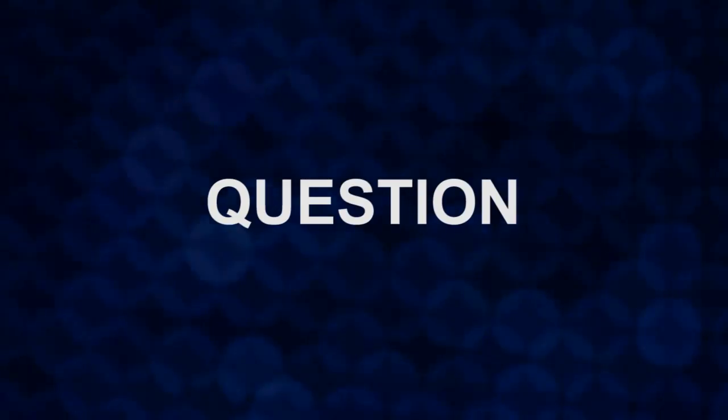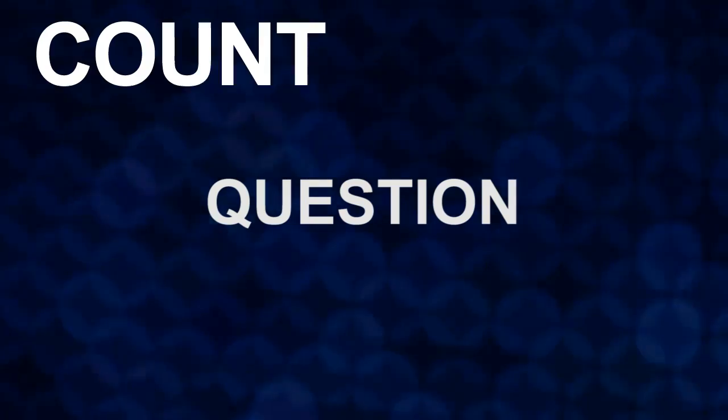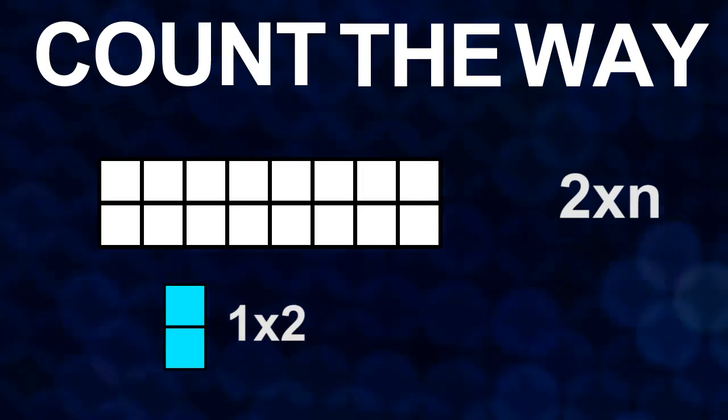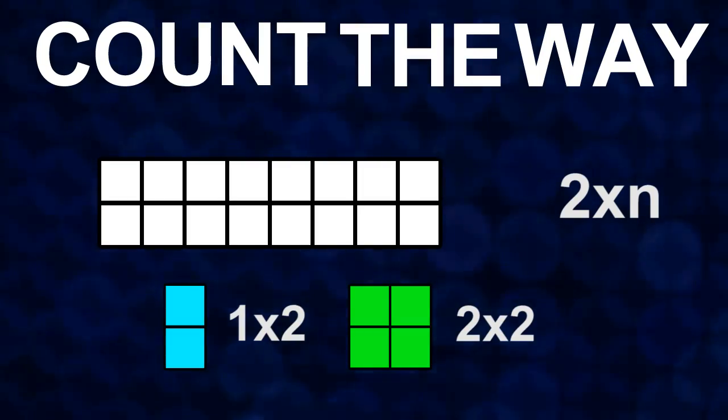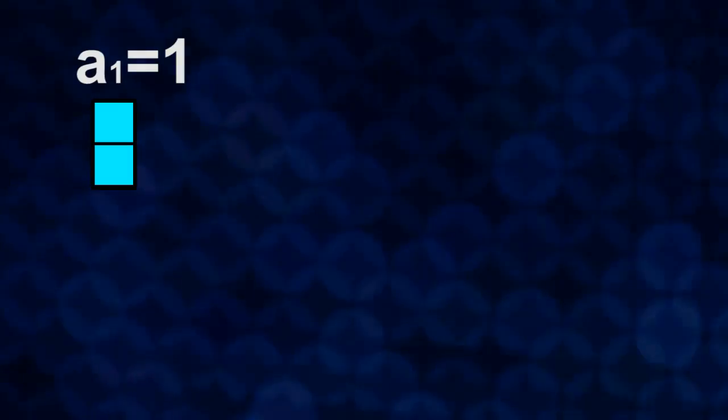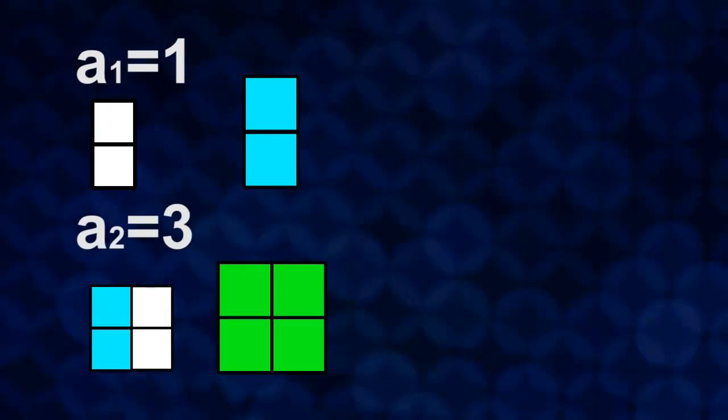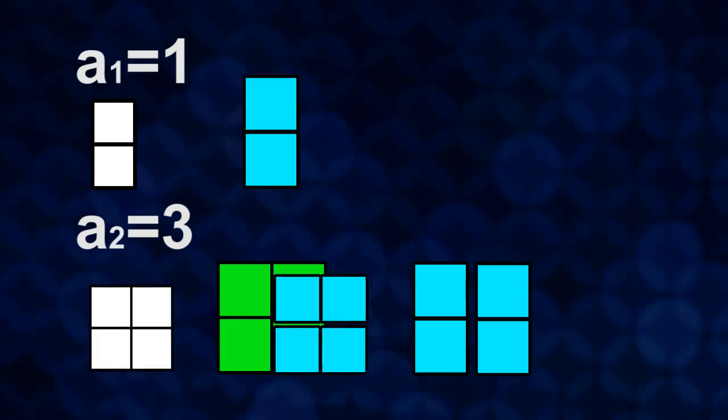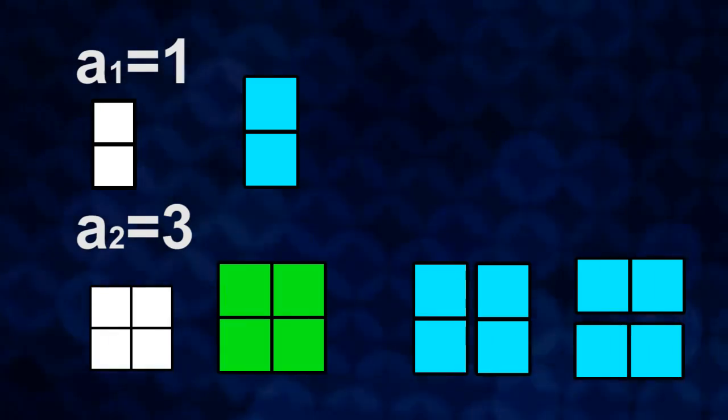In the next question, count the ways a n that 2 cross n block can be covered with 2 cross 1 blocks and 2 cross 2 blocks. And the way to solve this problem will be described below as always. First, it is trivial that a1 is equal to 1. And also, there are three ways to describe below to cover 2 cross 2 blocks.